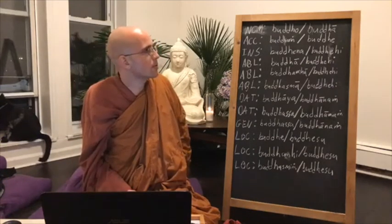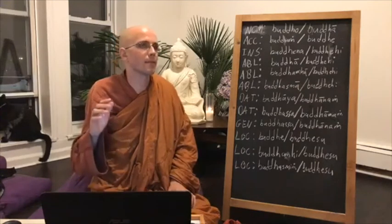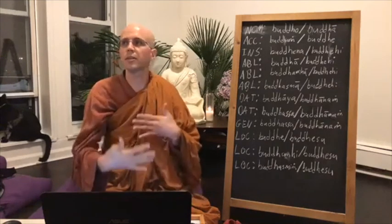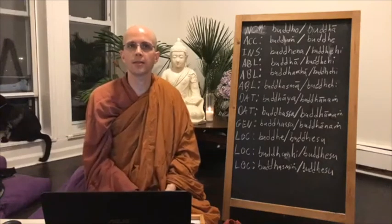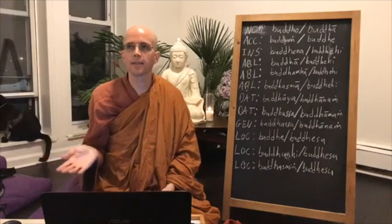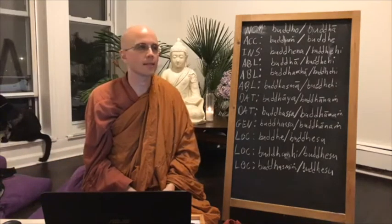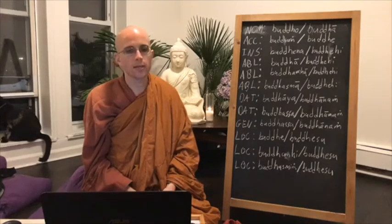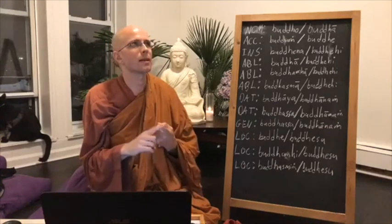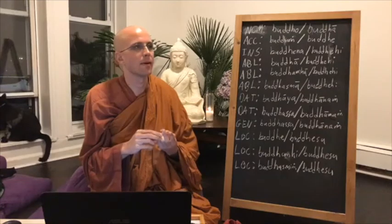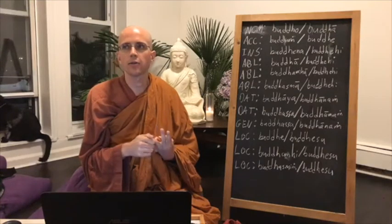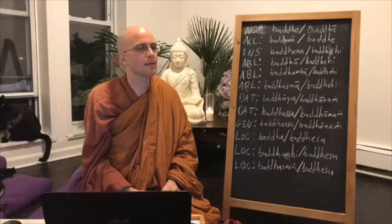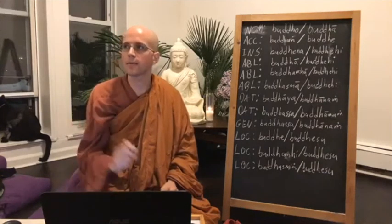Instrumental is, as the name implies, the instrument of action — by, with, or through. So Buddhena means 'with the Buddha' or 'by means of the Buddha.' It's also used to indicate a method by which something happens. Bhavanena means 'using meditation,' and Magena means 'by means of the path' or 'using the path.'